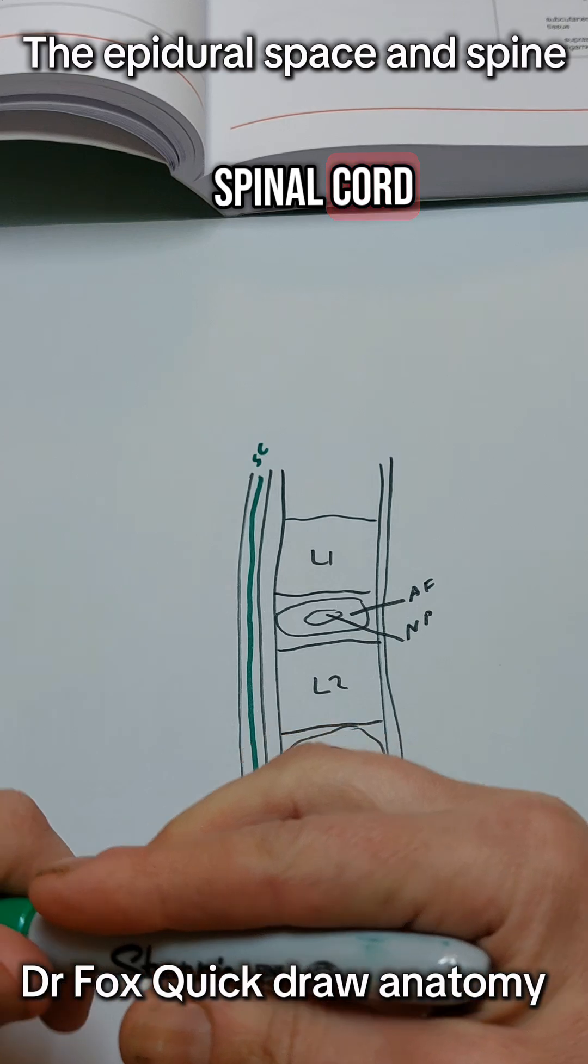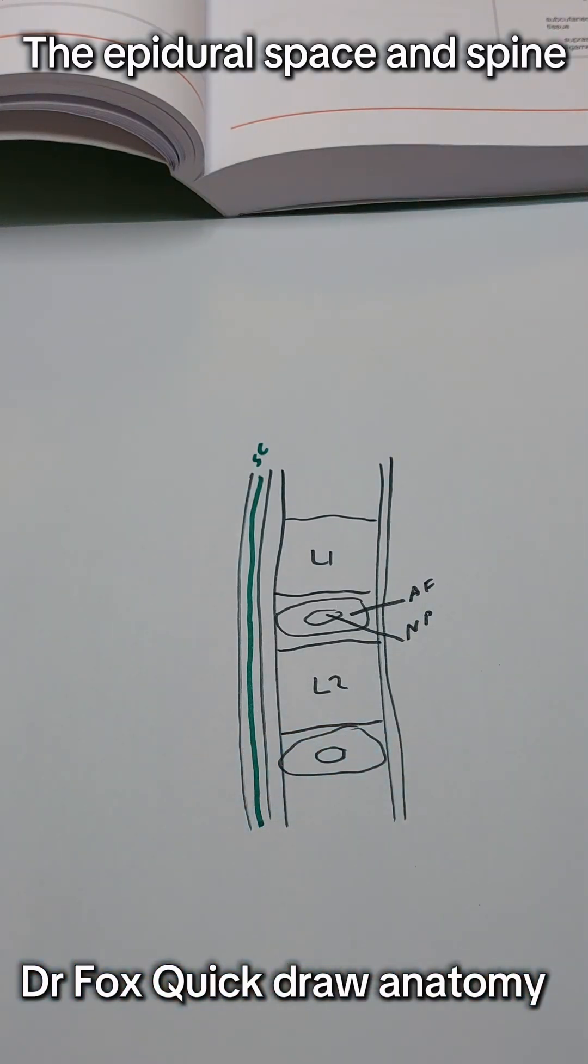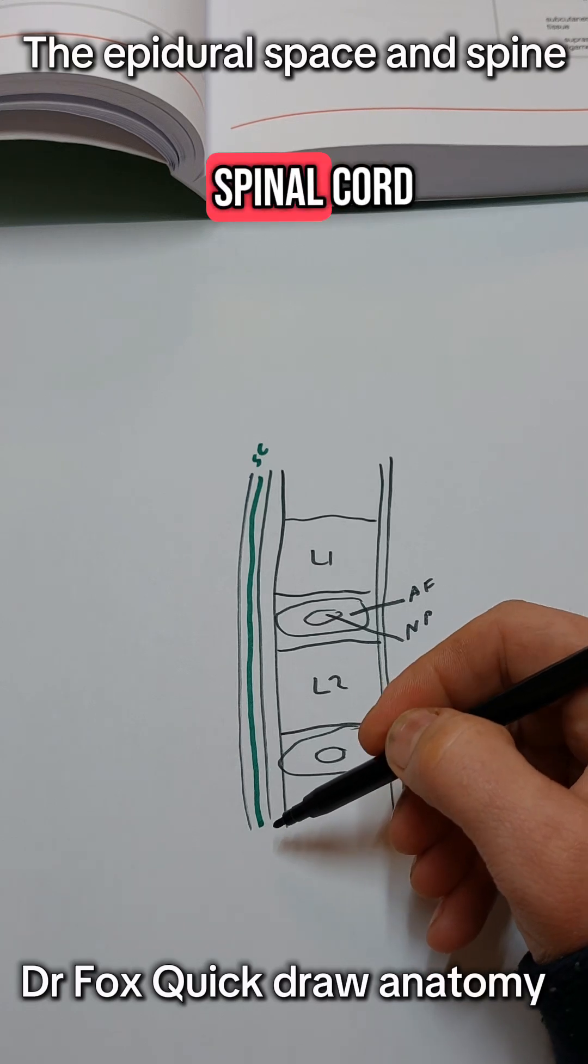The green line represents the spinal cord, and the black lines represent the dura of the spinal cord.